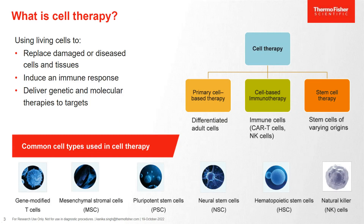So what exactly is cell therapy? With living cells from the patient or a donor, cell therapy replaces damaged or diseased cells, or stimulates the body's immune response or regeneration. It can also serve as a delivery vehicle for genetics and molecular therapies to the targets. There are different types of cells used for cell therapy. The first one is differentiated adult cells which are isolated directly from human tissue. The next is immune cells, examples of which are CAR-T cells, which are a major segment of immune therapy these days.